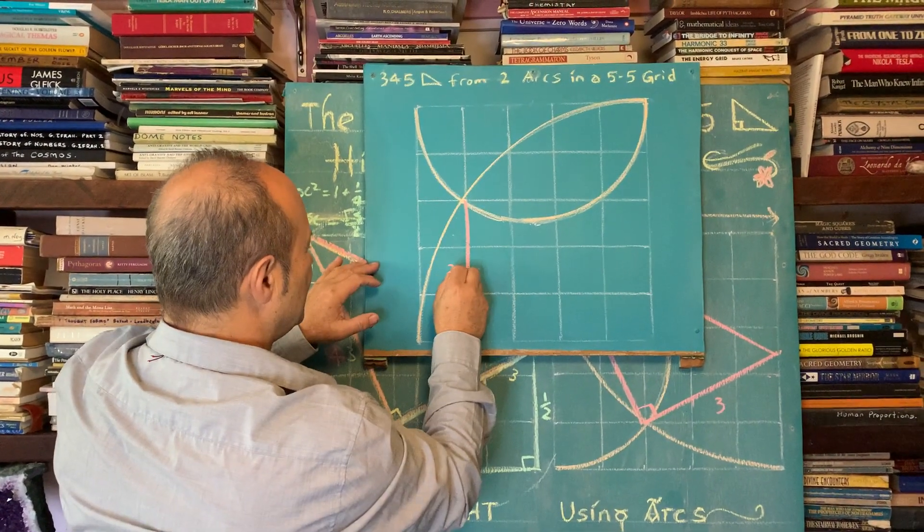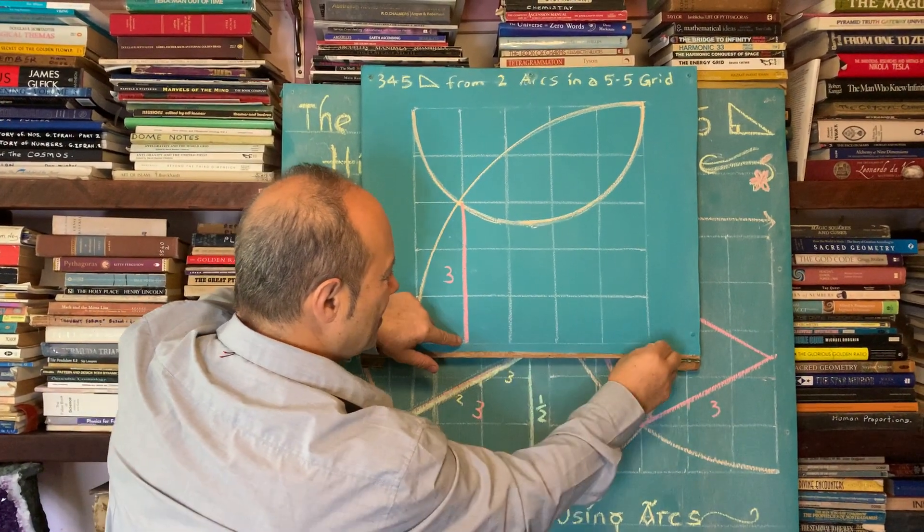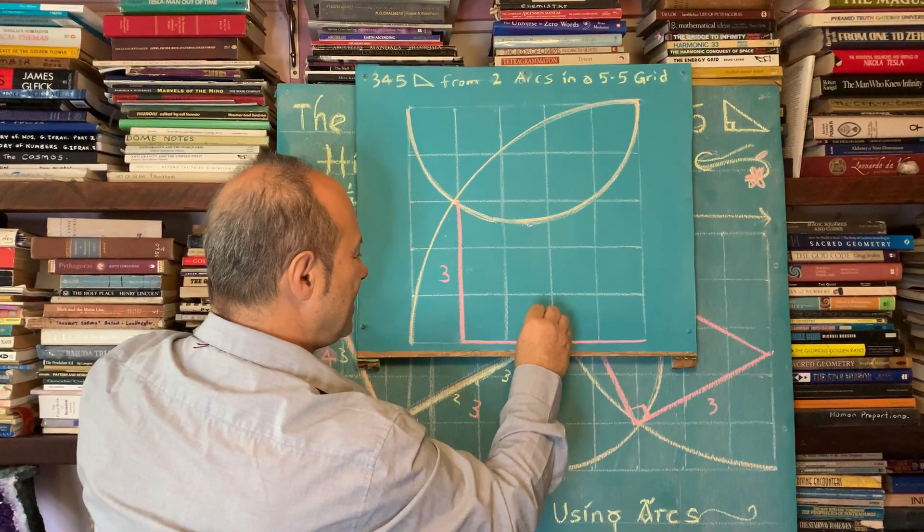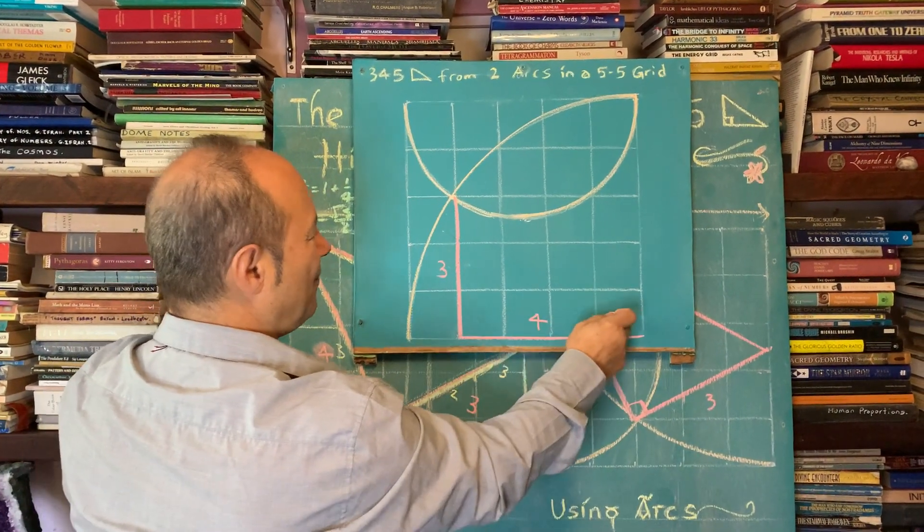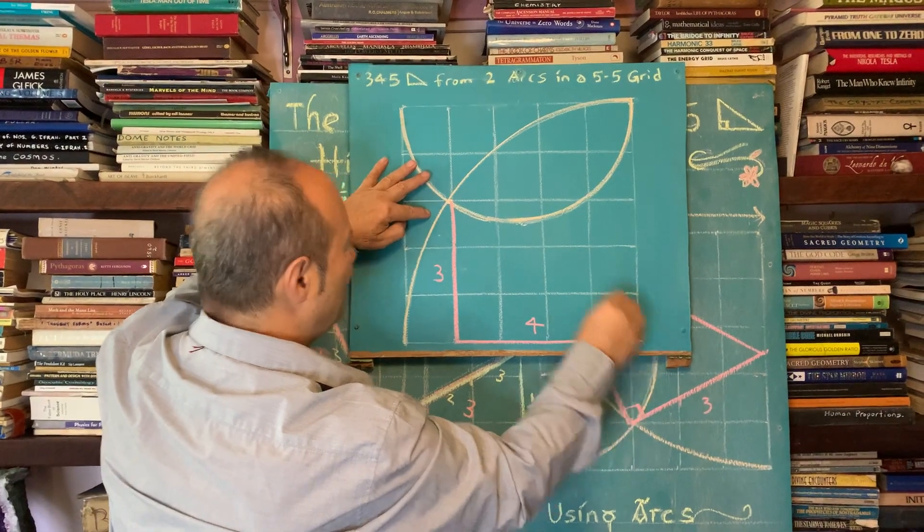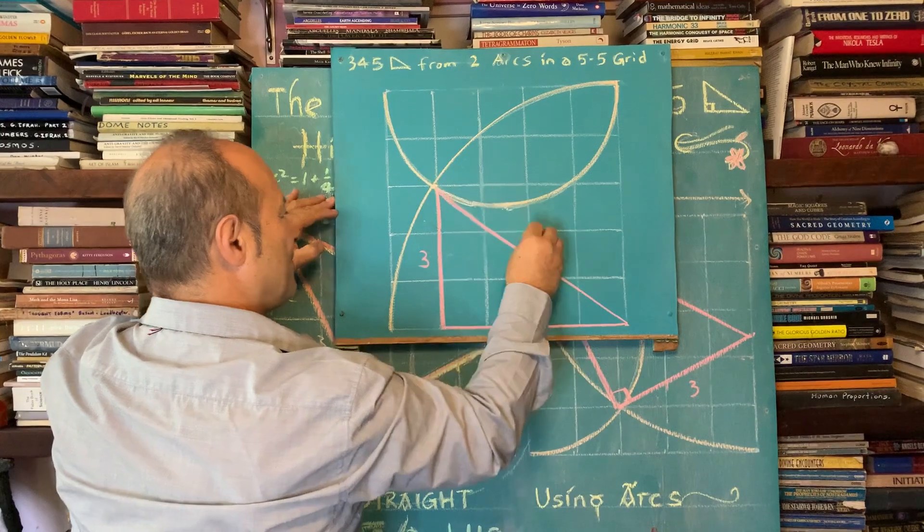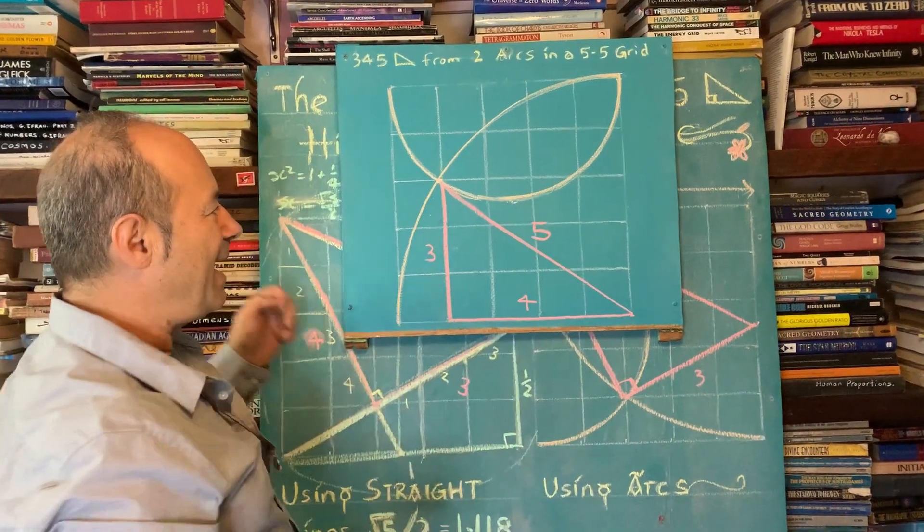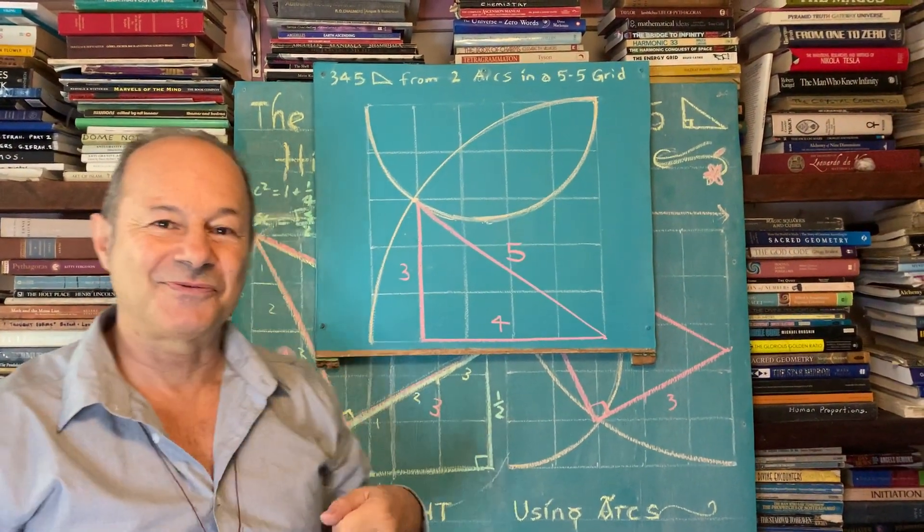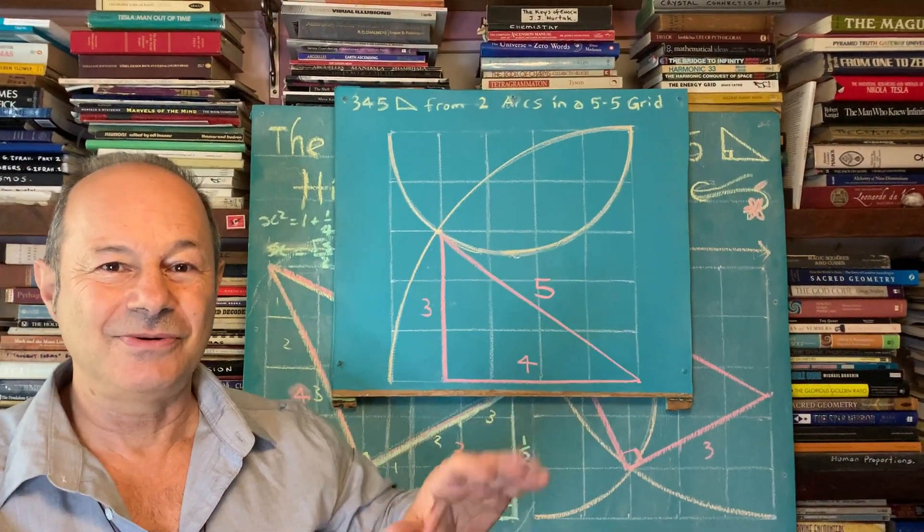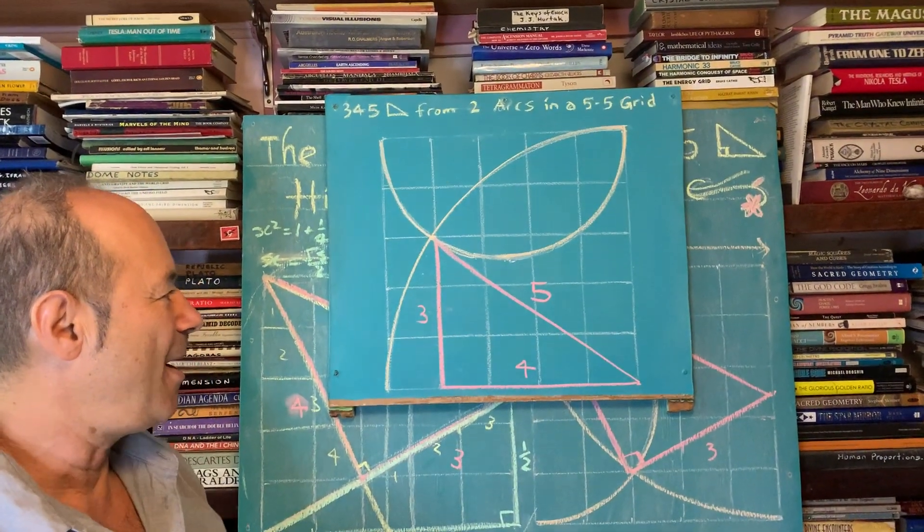But this diagram is superior to all the others because I can clearly count 1, 2, 3 units. And as I go from here, because it's a 5x5 grid, I can clearly see that this is 1, 2, 3, 4. And obviously according to Pythagoras's theorem, this must be 5.